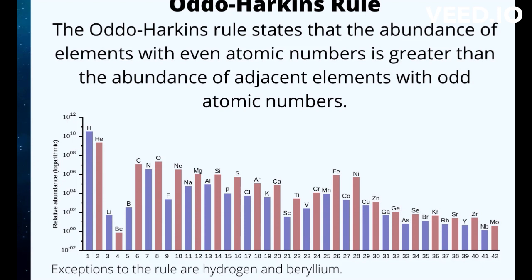An element's atomic number is the number of protons in its atom. One explanation for the higher abundance of even-numbered elements is that helium, atomic number 2, is a major building block for element formation. Fusion of helium nuclei builds subsequent even atomic number elements.